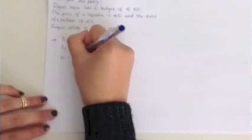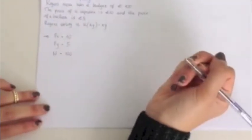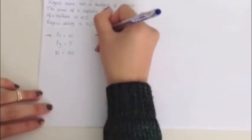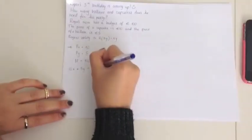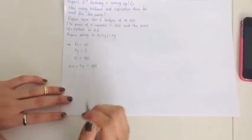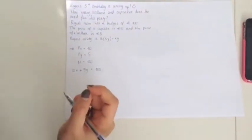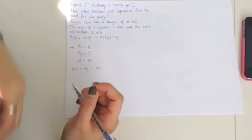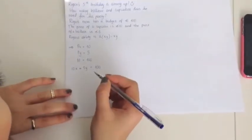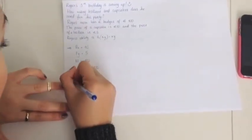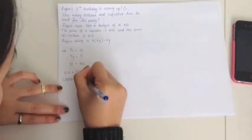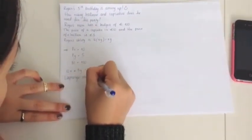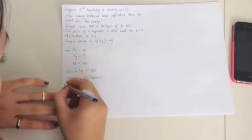We can then write our budget constraint by saying 10X plus 5Y equals 100. However, because we are going to use the Lagrange multiplier, we need to rewrite this equal to zero. So you end up with 10X plus 5Y minus 100 equals 0.